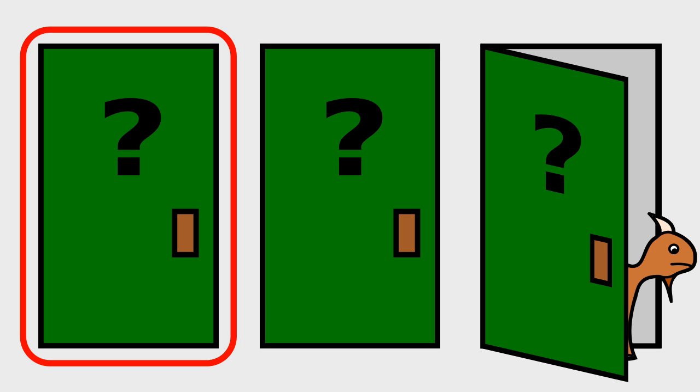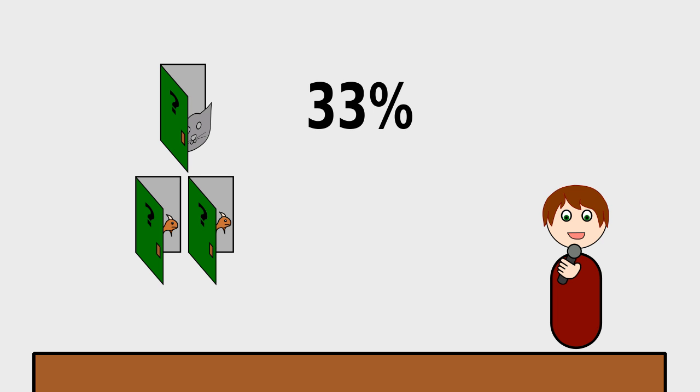The whole game might seem a little arbitrary. When you picked the first door, you had a 33% chance of guessing correctly. Once I eliminated one of the doors, you could choose between two doors. So 50-50, right? Well, it's not actually that simple.